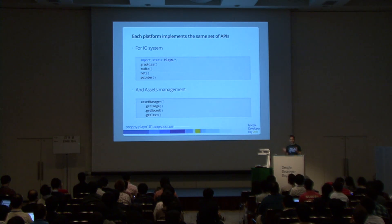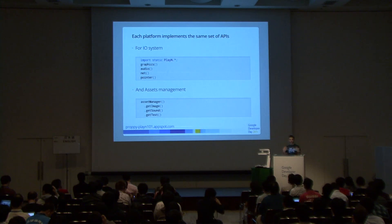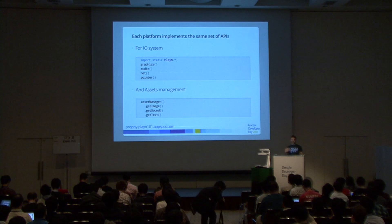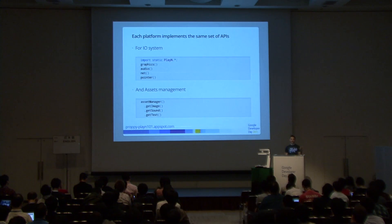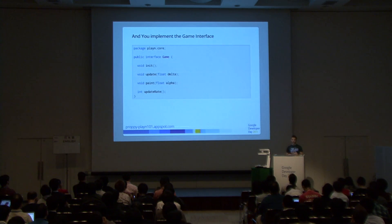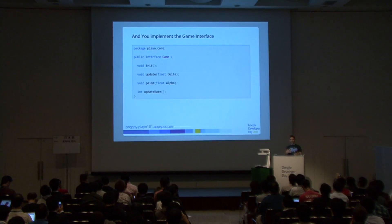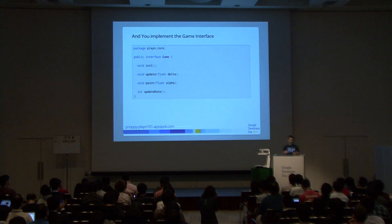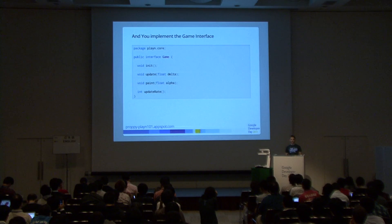PlayN also provides asset management for each platform, so on each platform you have a way to get images, sounds, and text. You define a game by implementing the game interface and overriding the following functions: init for initialization, update to update your game logic — where you're passed the delta time elapsed since the last update — and the paint function to update object positions and animation. You also supply the update rate, for example returning 25 to call game logic 25 times per second.